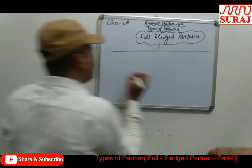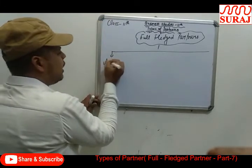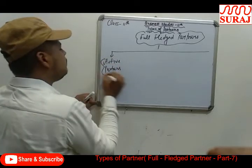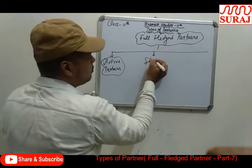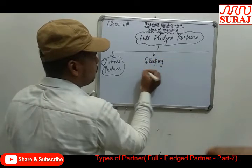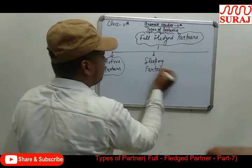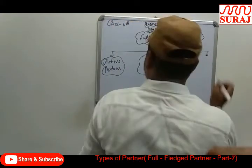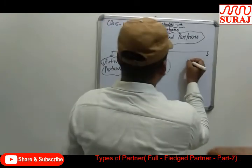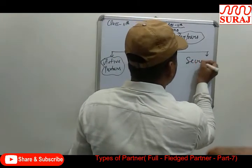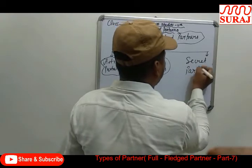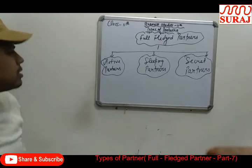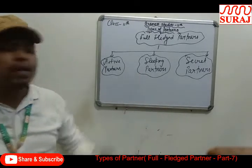There are three types of full-fledged partners: 1. Active partners, 2. Sleeping partner, and 3. Secret partner.